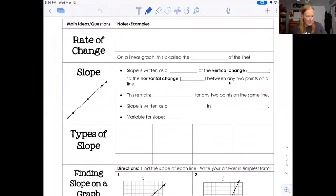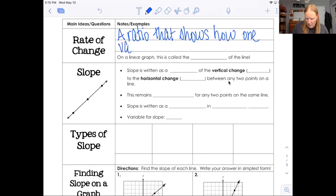So let's say here that slope is a ratio that shows how one variable changes with respect to another. So it's a ratio that shows how one variable changes with respect to another. It's going to be a fraction usually.